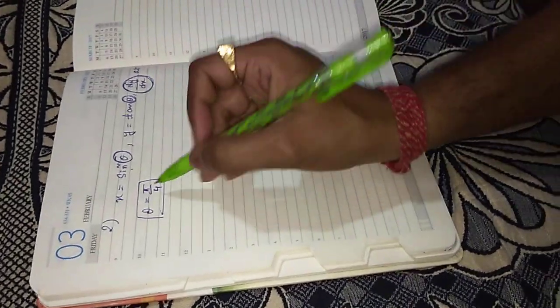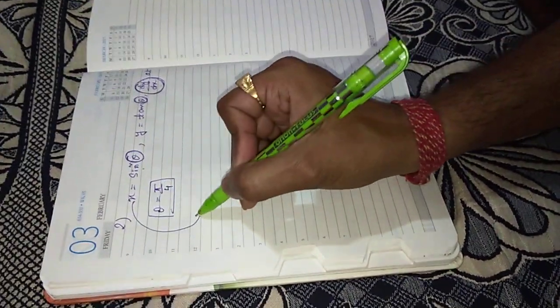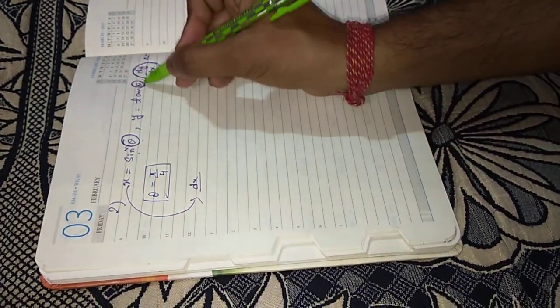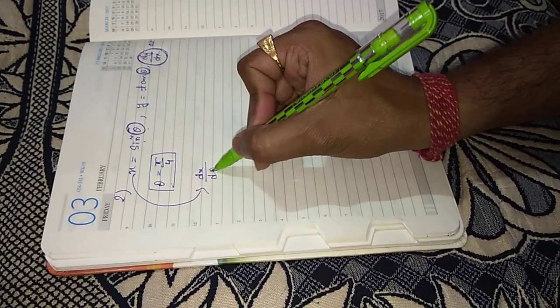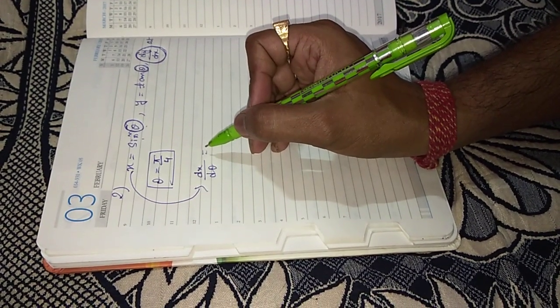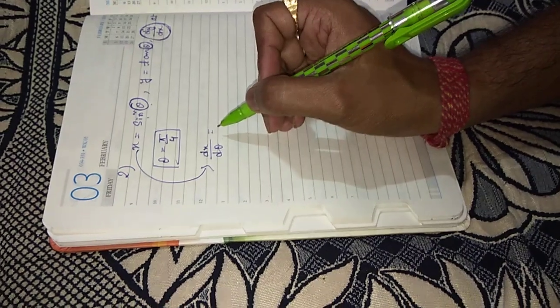That means you have to differentiate these two functions with respect to theta. Parameter theta hai, that's why we differentiate with respect to theta. Not only t, theta can be the parameter. The common connected variable.